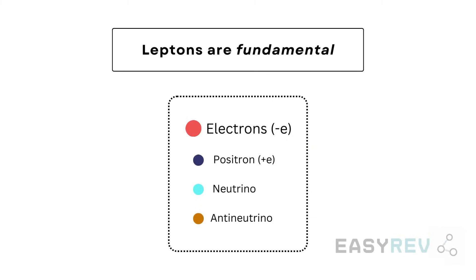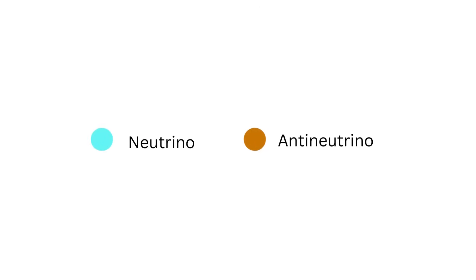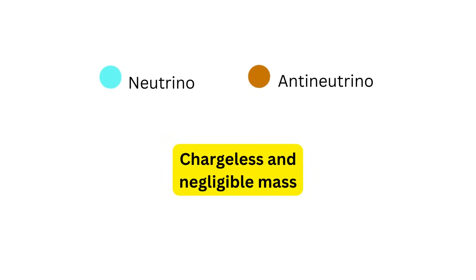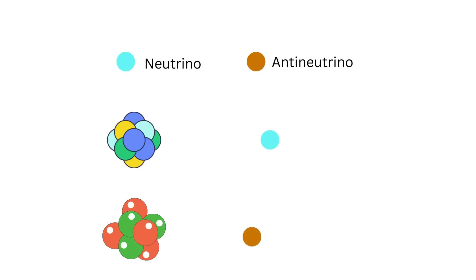The next particle we have is the positron which is simply the antiparticle version of the electron. Finally, the remaining two types of leptons we have are the neutrino and the antineutrino. These two particles are chargeless and have negligible mass and we will see them more importantly when we encounter beta decay.